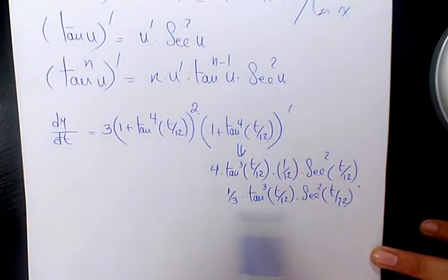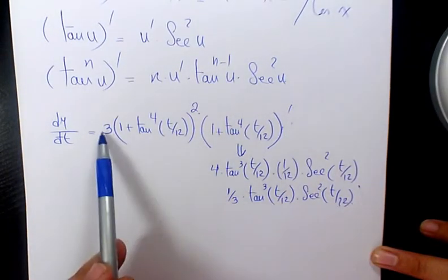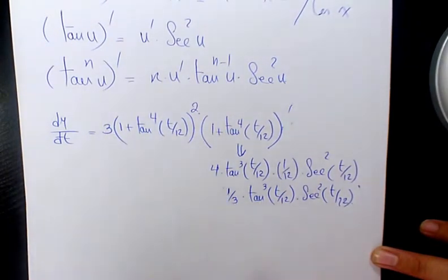Then, this part is going to be the answer to this part. So, when you multiply it, 3 and 1 over 3, they cancel out.